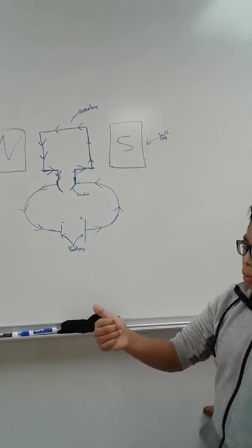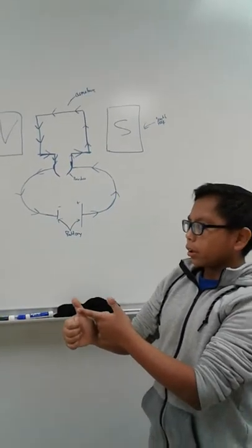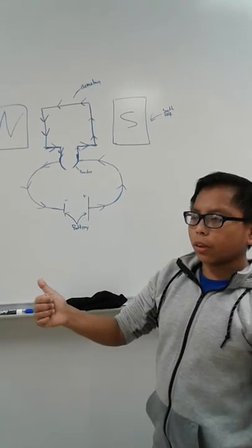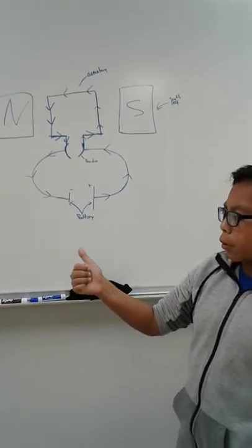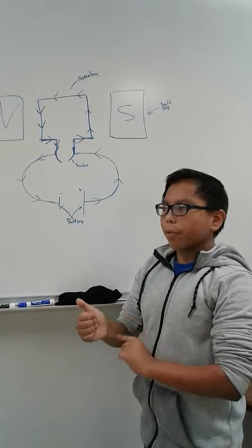And then we can use the right-hand rule. We can just do it with thumbs up. The thumb will be the current. The fingers wrapped around your thumb will represent the magnetic field, which way it would go around the wire and the electrical current.